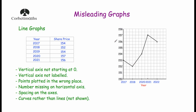If you do want to skip out numbers on graphs, look out for little zigzags at the beginning of the vertical or horizontal axis. Here there's no zigzag, so you get the impression it starts at zero, but it actually starts at 150 — and that's why it's misleading. Another problem with this line graph is the vertical axis hasn't been labeled — it should say 'share price'. Also, the points are plotted in the wrong place: the 2017 point is plotted at 153 but should be 154, and 2019 has been left off entirely. There's also a number missing on the horizontal axis — 2019 is missing.